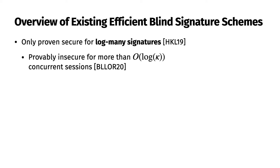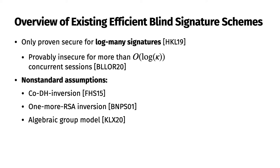Our paper begins by observing a gap in existing efficient blind signature schemes. We look at existing schemes and note some of the common caveats. First, the blind-Schnorr signature scheme is only proven secure for logarithmically many signatures. In addition, it was proven last year that it is completely broken for more than the log of two kappa concurrent sessions where kappa is the security parameter. Another observation is that other schemes supporting polynomially many signatures rely on non-standard assumptions, including the code Diffie-Hellman inversion assumption, the one-more RSA inversion assumption, and the algebraic group model. Finally, there are some blind signature schemes which don't provide concurrency at all.